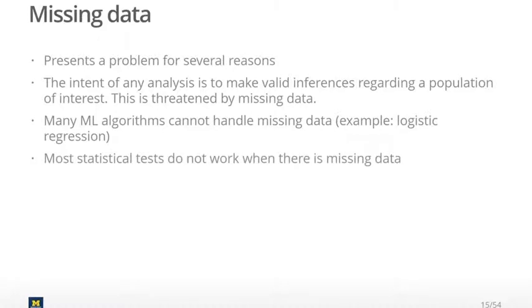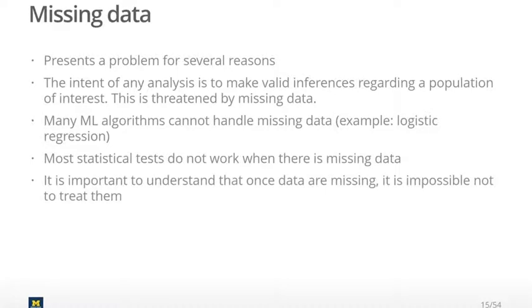So as I mentioned, most statistical tests don't work when there is missing data. And it's important to understand that once the data has gone missing, it's impossible not to treat it in some way. So you might think that, let's just toss the missing data, let's just get rid of the rows, or get rid of the variables with a lot of missingness, and think that you're solving the problem. But throwing out data is actually still a form of treatment.